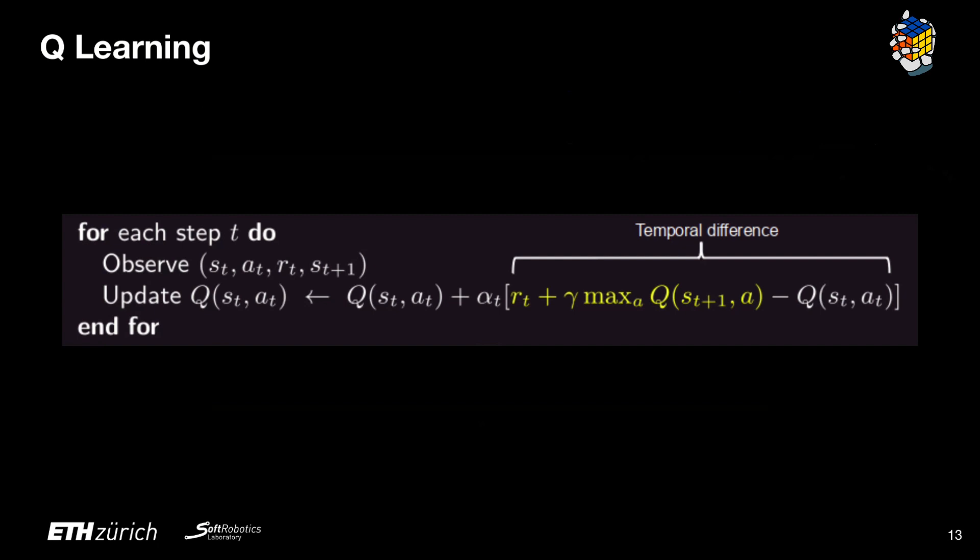In Q-learning, the agent performs an action based on the state it is currently in. It then observes the reward and the next state it finds itself in. Afterwards, it calculates the temporal difference value by summing the reward with the discount factor times the maximum Q value at the state the agent ended up in, minus the current estimate of the Q value in the initial state and given the action the agent took. This temporal difference is then multiplied by a hyperparameter alpha called the learning rate and summed to the current estimate of the Q value in the initial state and given the action the agent took.